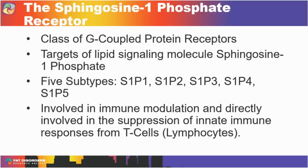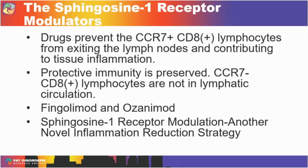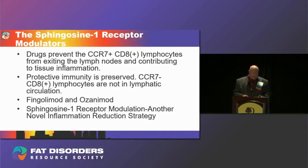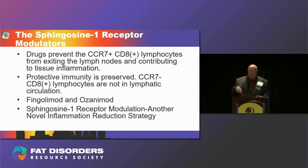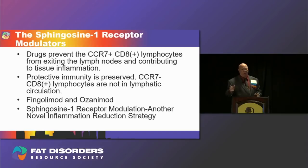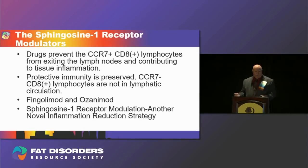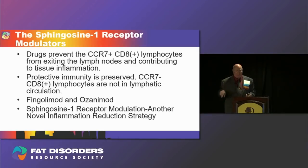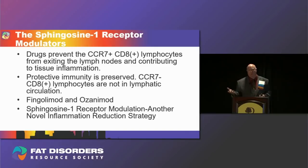The sphingosine-1 phosphate receptor is in the class of G-coupled protein receptors and is the target of the lipid signaling molecule sphingosine-1 phosphate. There are five subtypes — one through five — and they are involved in immune modulation and the suppression of innate immune responses from T lymphocytes. A class of drugs has been developed that modulates the sphingosine-1 phosphate receptors, thereby preventing CCR7-positive CD8-positive T cells from leaving the lymph nodes and migrating to sites of inflammation. CCR7-negative CD8-positive T cells are not in the lymphatic circulation, so protective immunity is preserved.